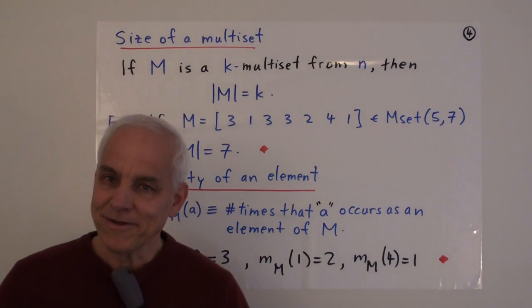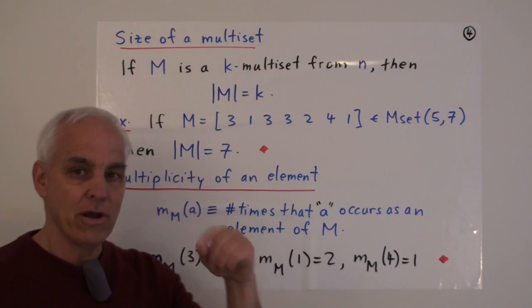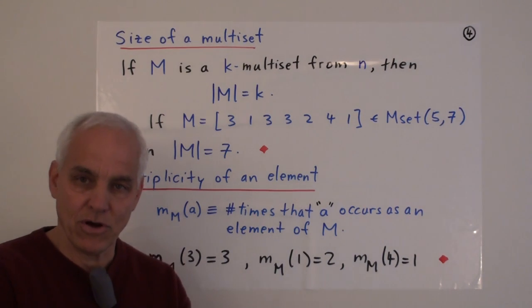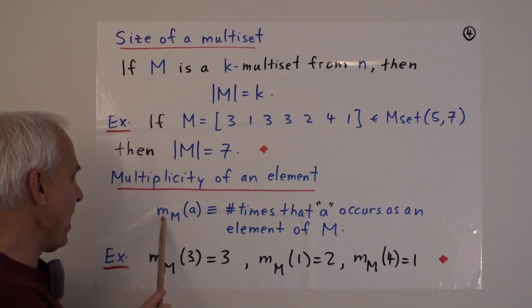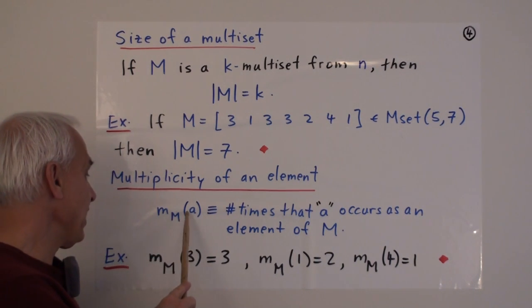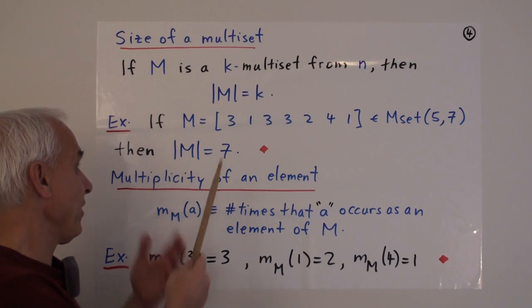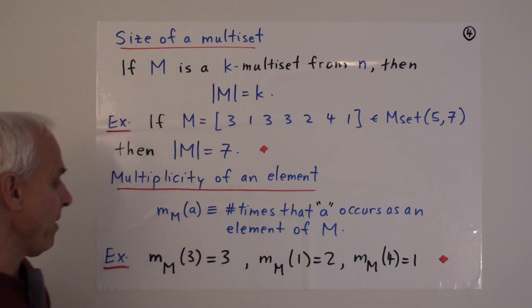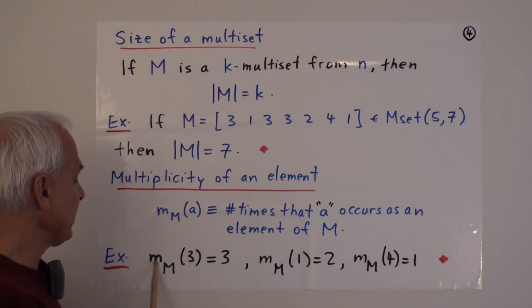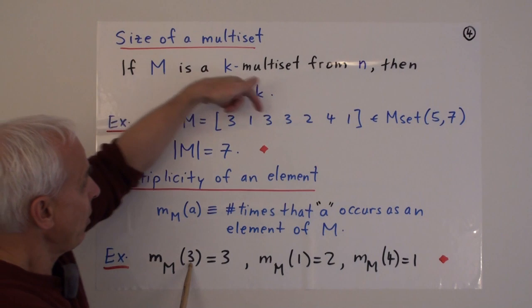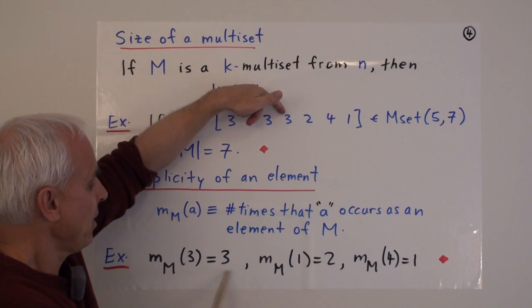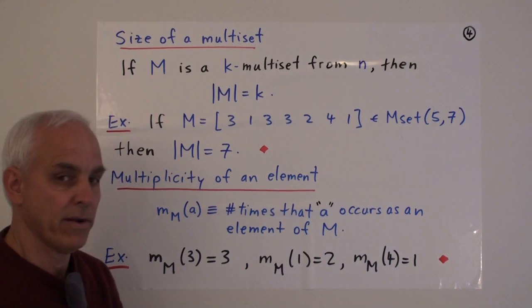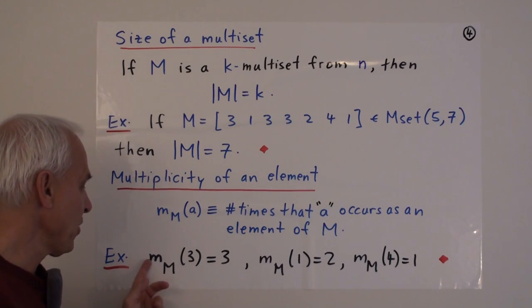The multiplicity of an element: in this kind of situation, a given element can occur more than once. So, it makes sense to give some notation to denote the number of times an element occurs. And we'll use this convention, that m, standing for multiplicity. So, the multiplicity of a in capital M is the number of times that the object a occurs as an element of capital M. So, in this example here, the multiplicity in capital M of the element 3 is three, because it occurs three times. While the multiplicity of 1 is just two, there are two occurrences. While the multiplicity of 4 would be one.